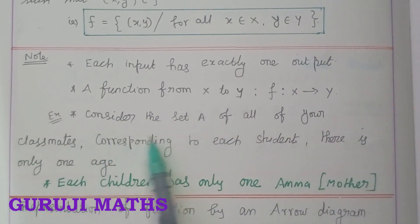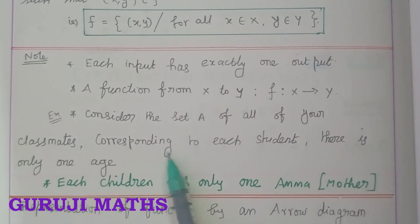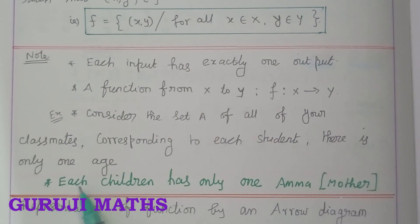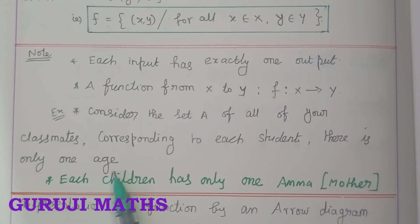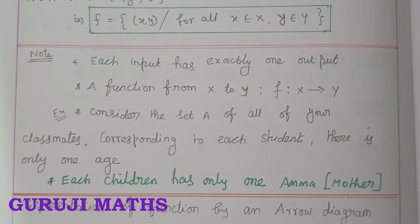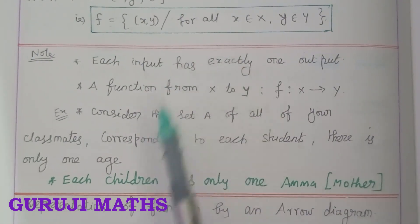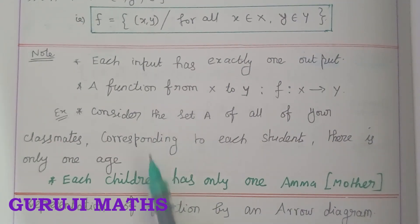Consider the set of all your classmates. Corresponding to each student, there is only one age. Each student maps to one age — this is a real-time example of a function.